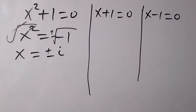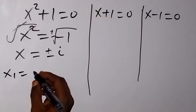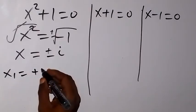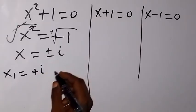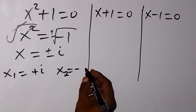So we have two values of x here. So we can call the first one x1 is equal to plus i. Then we can call the second value of x, that's x2, to be equal to minus i.